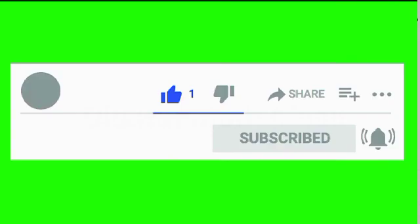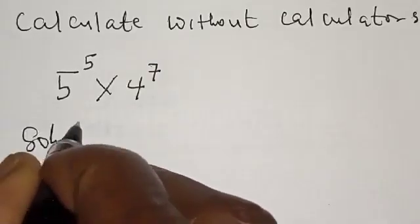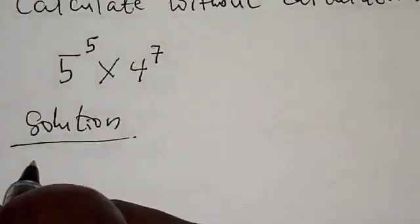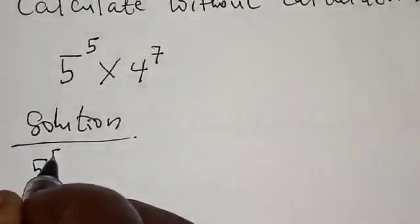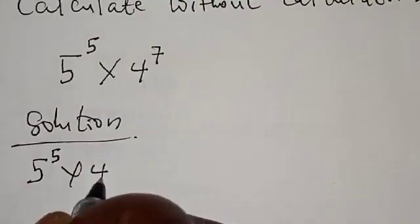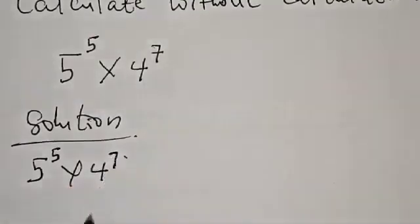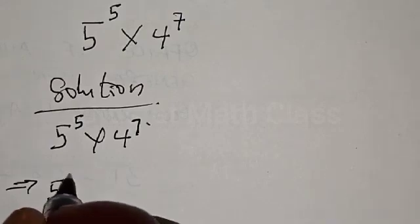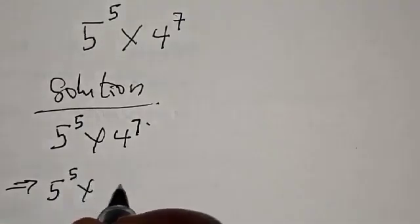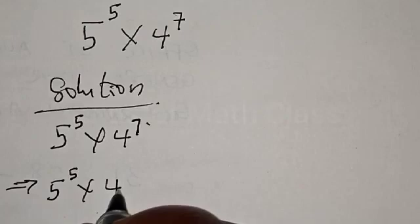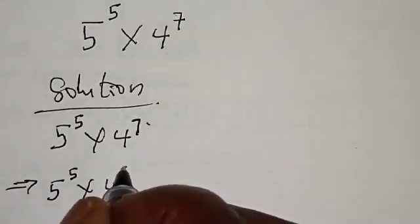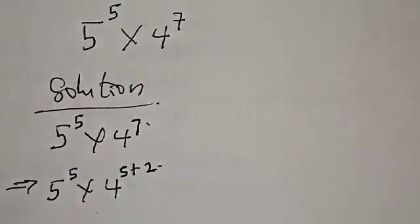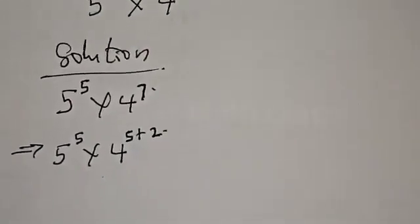Solution: we have 5 raised to power 5 multiplied by 4 raised to power 7. This can be expressed by writing 4 raised to power 7 as 4 raised to power 5 plus 2, since 5 plus 2 equals 7.